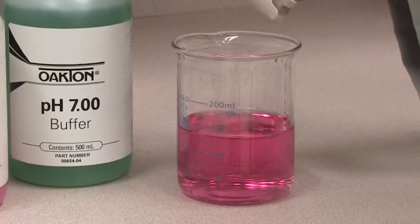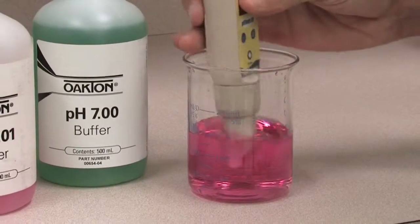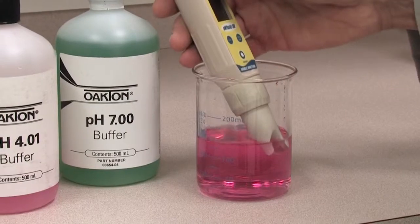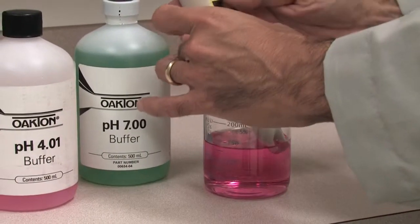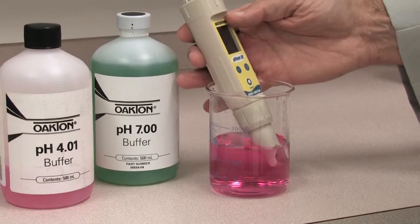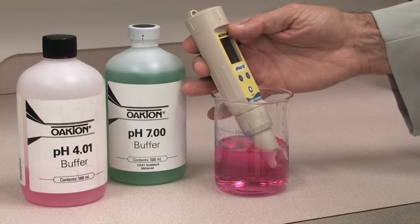Always check your tester by calibrating. If it calibrates to buffers, it can be used to take measurements. When it cannot be calibrated, even after attempts to condition or clean it, the pH sensor module must be replaced.